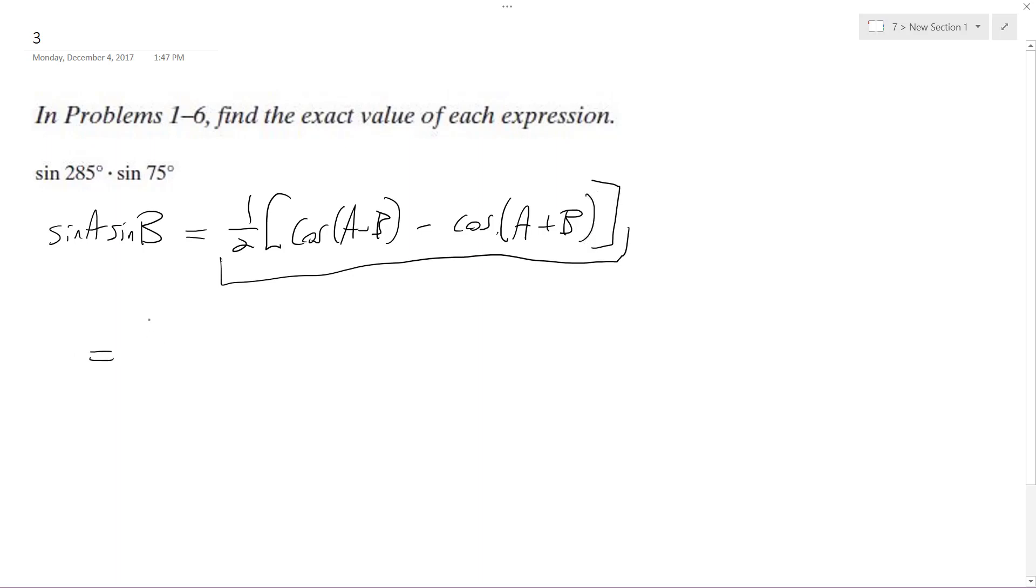In this instance, we have one-half of cosine of 285 minus 75, minus cosine of 285 plus 75.